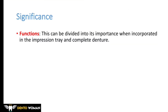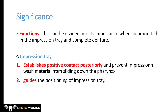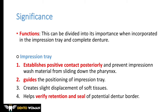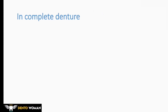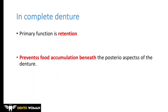The significance of posterior palatal seal differs between the impression tray and the complete denture. In the impression tray, it establishes positive contact posteriorly and prevents the impression wash material from sliding down the pharynx. It also guides the positioning of the impression tray, creates slight displacement of soft tissues, and helps verify the retention and seal of the potential denture border.